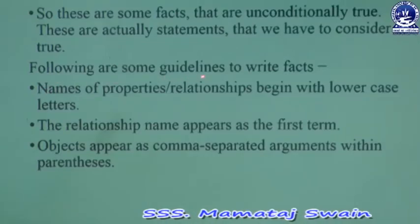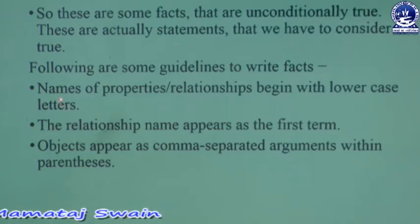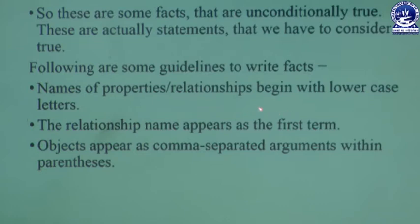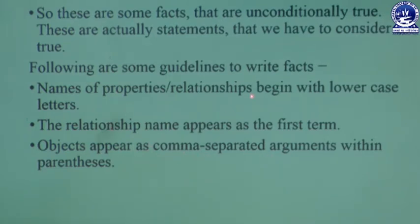Following are some guidelines to write facts. First, names of properties or relationships begin with lowercase letters. The relationship name appears as the first term. Objects appear as comma-separated arguments within parentheses. A period — the dot symbol — must end a fact. Objects also begin with lowercase letters; they can also begin with digits and can be strings of characters enclosed in quotes.